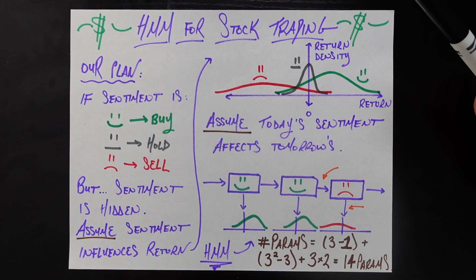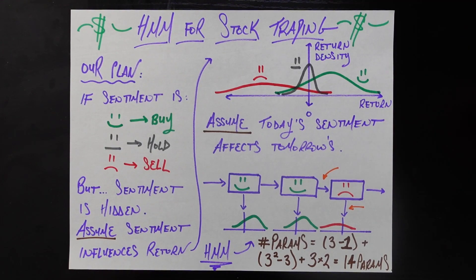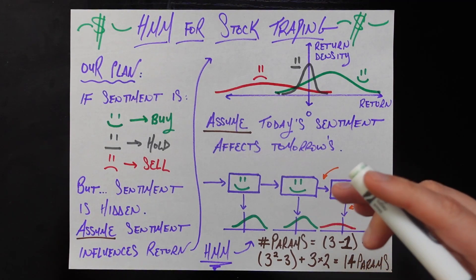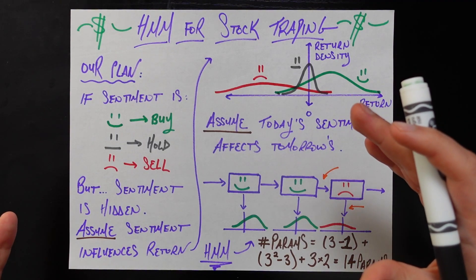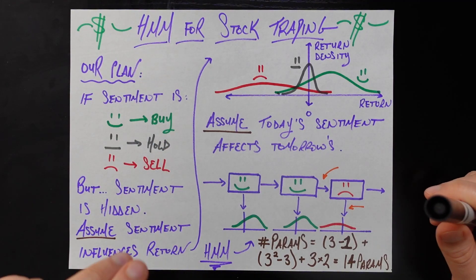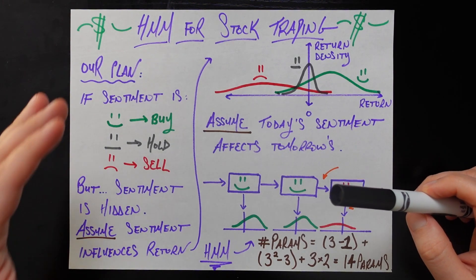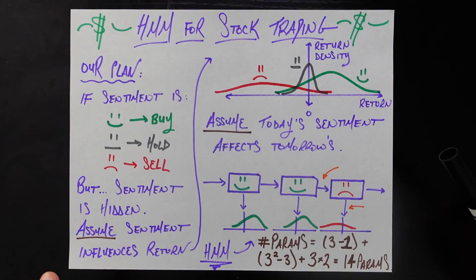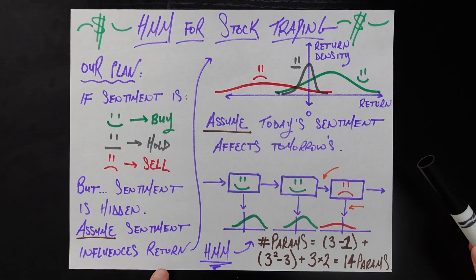There's one problem with using sentiment for stock return forecasting: sentiment is hidden. I can't go around polling everybody asking what their sentiment is about Tesla or Microsoft stock today. There might be proxies online, but in general it's a hidden variable — which makes it a perfect fit for the hidden Markov model as a latent feature affecting the observed feature, the actual stock returns. Our first assumption is that sentiment is hidden but influences the stock's return on any given day.